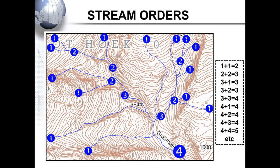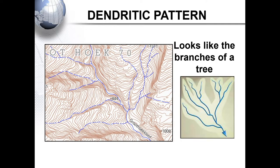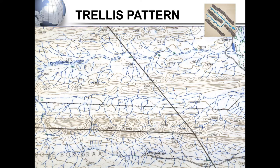Important to note that the river always keeps the highest order — if a third-order and a first-order meet, it remains third order. You can be asked to identify the drainage pattern in a certain block on a topographic map. Remember, with our dendritic pattern it looks like the branches of a tree. To identify a trellis pattern, you have mountainous areas with harder rock and then softer layers where the river will flow.